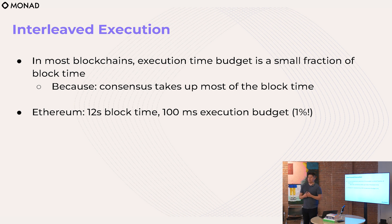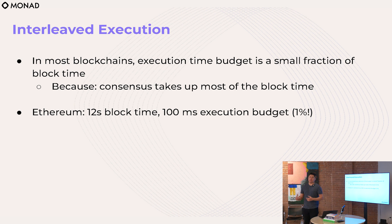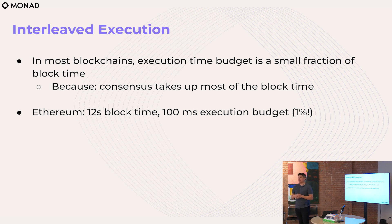It's a highly interleaved process, and the problem is that the budget for execution is very limited — a very small fraction of the block time. Consensus is expensive; nodes are potentially on opposite sides of the world communicating, so it takes up most of the block time. There's a shrinking effect where the actual budget for execution is only a very small portion. In Ethereum we have 12-second blocks, but the rough budget for execution is about 100 milliseconds — only one percent.